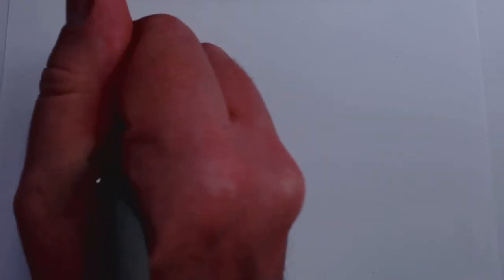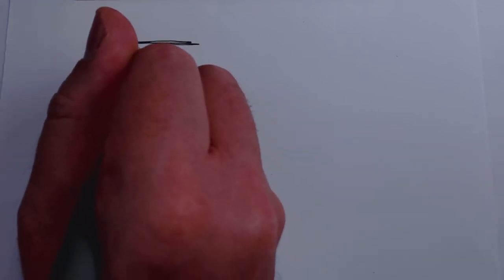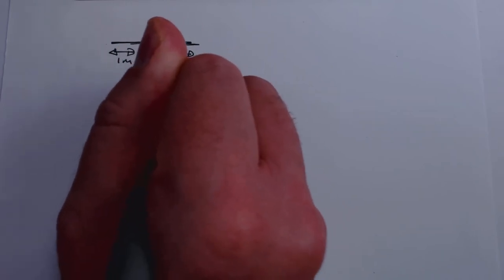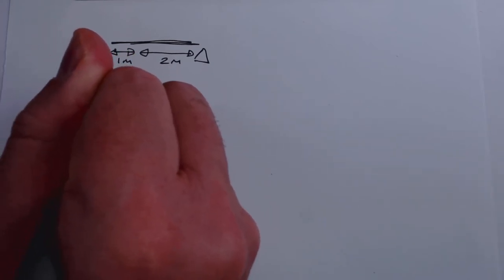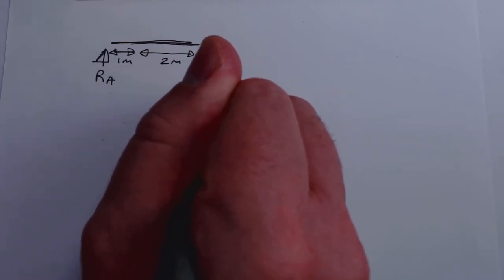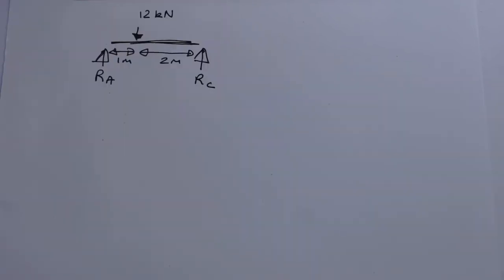For this problem we've got a beam. Previously the beam was, say, two meters long with the load one meter in the middle. This time let's say I've got one meter on the left side and two meters on the right side, with RA on the left, RC on the right, and 12 kilonewtons acting downward at the load point.